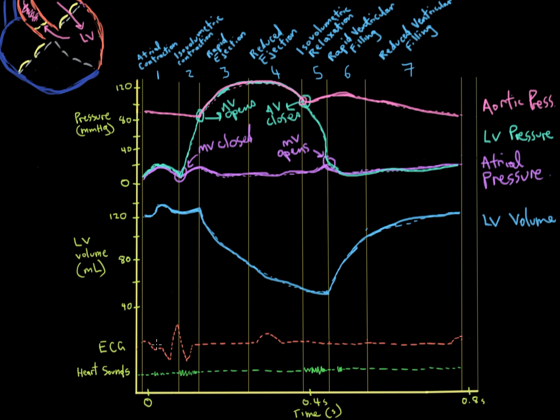This here is called a P wave, and that is a reflection of what's happening with your atria. This signifies an atrial contraction, the P wave. And this here is called a QRS complex, and this signifies a ventricular contraction. When you see this, it means that a ventricle has contracted.